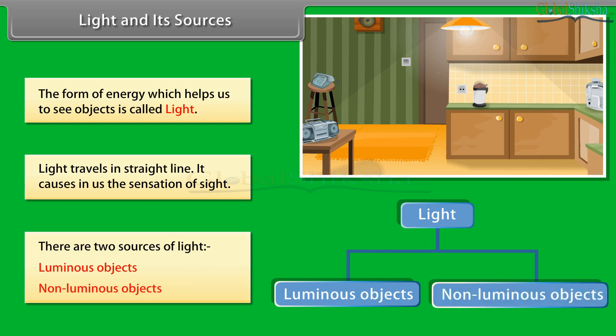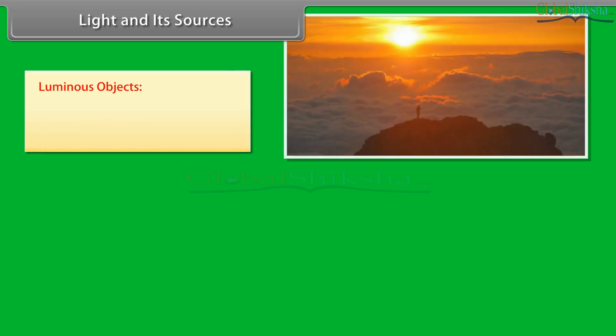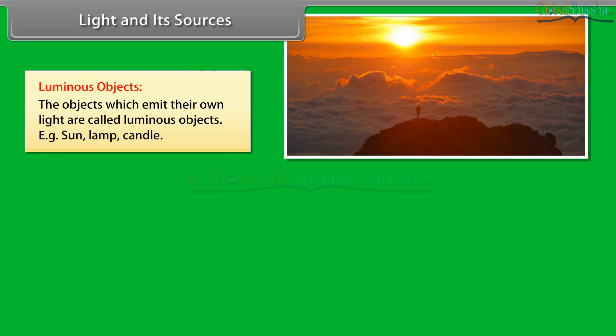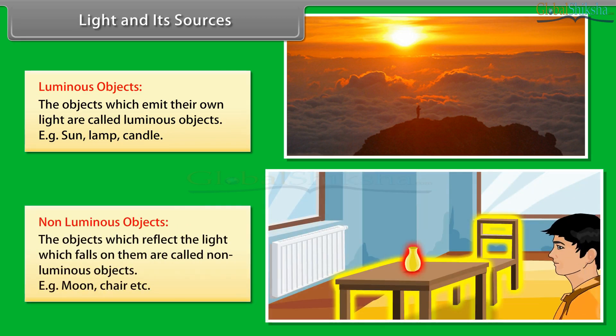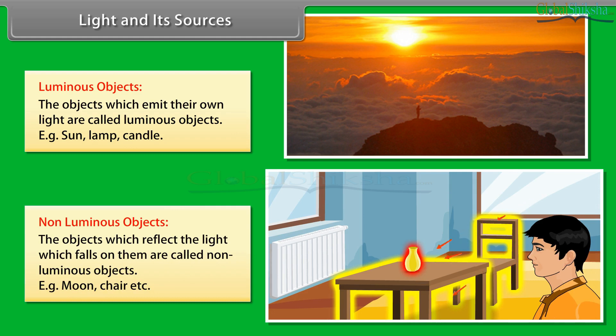Luminous objects: The objects which emit their own light are called luminous objects. Example: Sun, lamp, candle. Non-luminous objects: The objects which reflect the light which falls on them are called non-luminous objects. Example: moon, chair, etc.